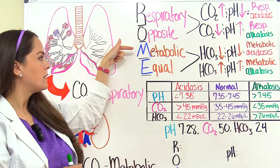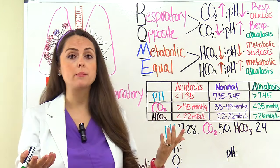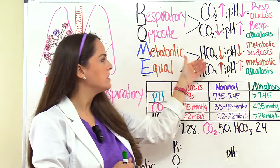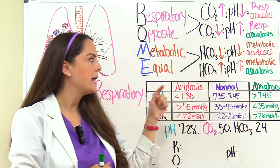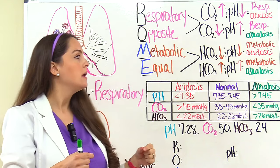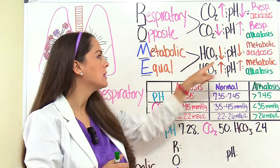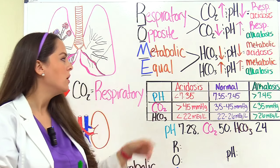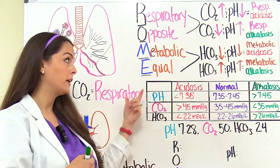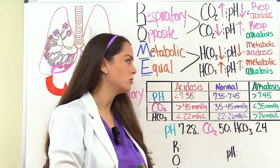Metabolic Equal means bicarb (HCO3) represents metabolic. When HCO3 is low and blood pH is low — they're equal because they're both low — it's metabolic acidosis. When bicarb is high and blood pH is high — equal because they're both high — it's metabolic alkalosis.